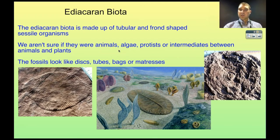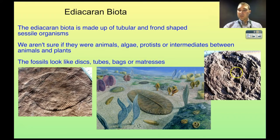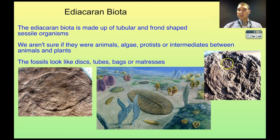The fossils that are preserved are from soft-bodied organisms, and soft-bodied organisms don't preserve particularly well — there's not enough detail to tell us exactly what kind of organisms they are. The fossils kind of look like discs, tubes, bags, or mattresses. One very common fossil was thought to be a jellyfish sitting at the bottom of the ocean, but now it's thought it might be the holdfast for something that was floating above it — just where it was holding onto the mud. Because the rest of the organism isn't preserved, we don't know.